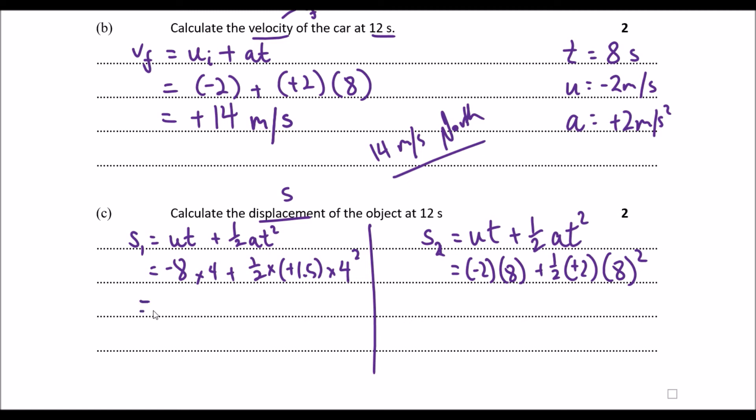So for the first one, we have a displacement of negative 20 meters. So we've gone south 20 meters. And then in the next eight seconds, we've gone positive 48 meters. So we've gone 48 meters north. So the total displacement, s total, is the addition of these two components. And that gives us plus 28 meters north.